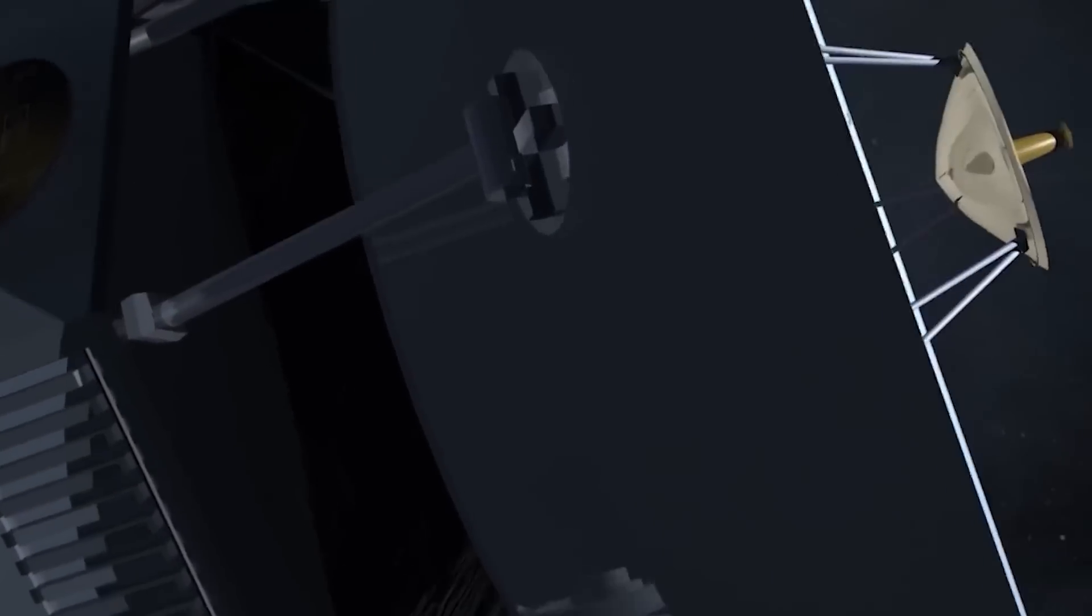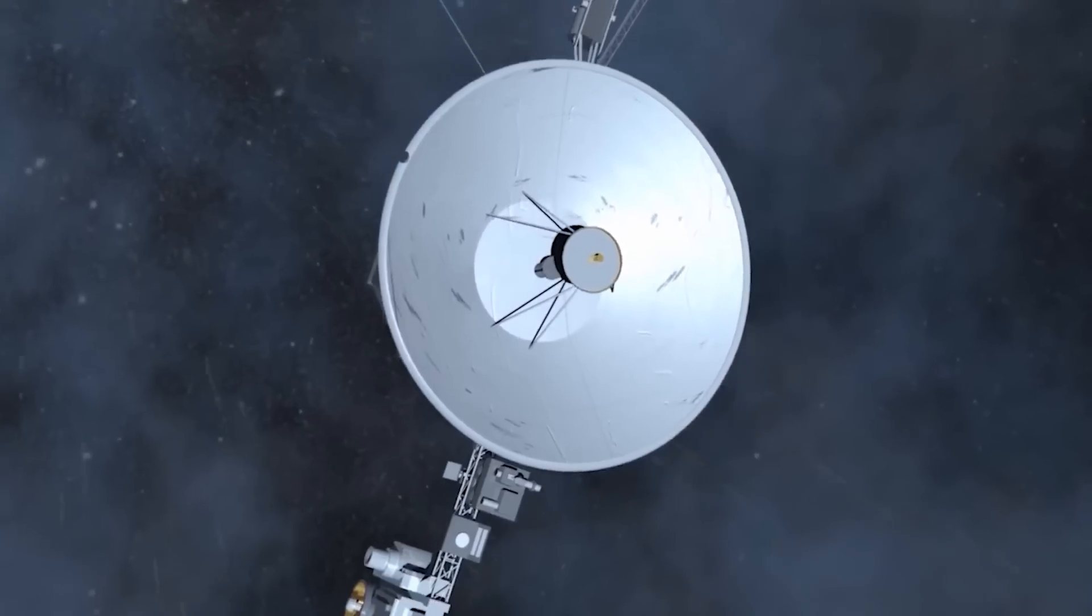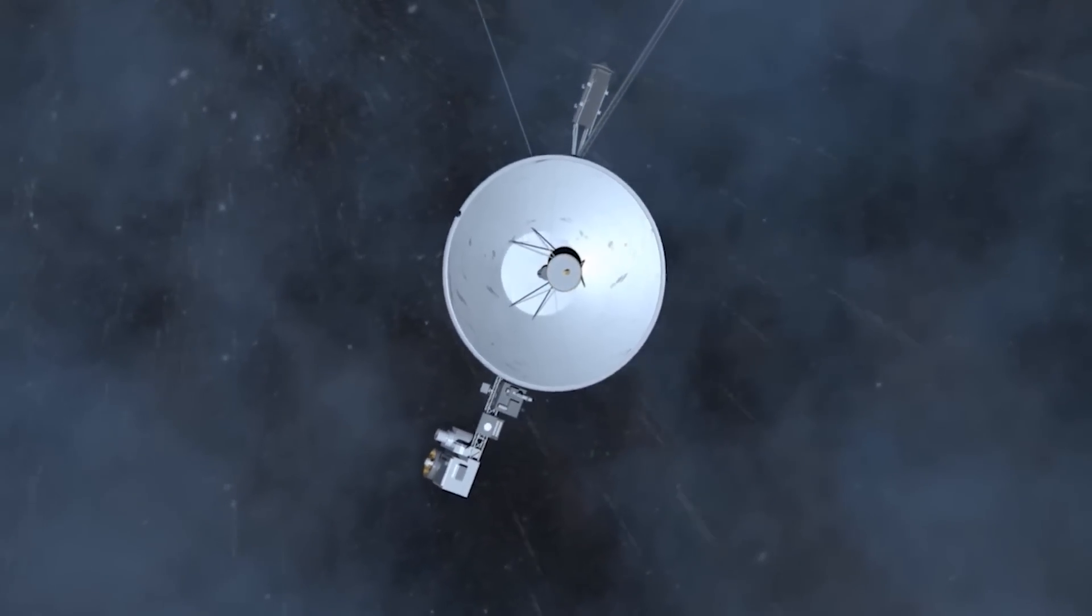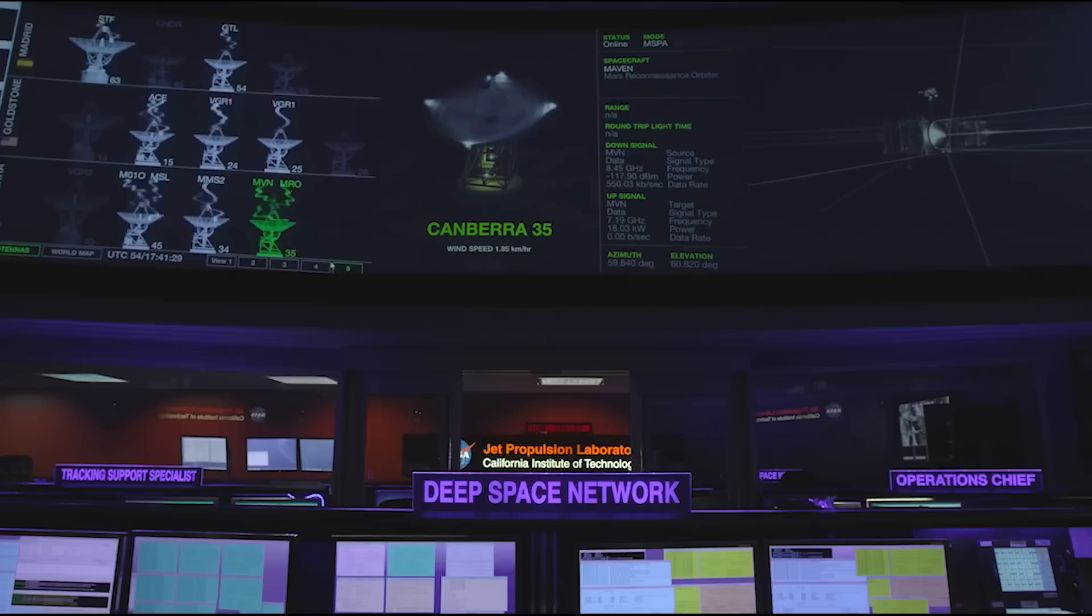The spacecraft had to traverse a challenging region known as the termination shock to reach interstellar space. In this area, the formidable solar winds, traveling at hypersonic speeds, collide with the opposing forces of the interstellar wind, creating intense resistance that Voyager 1 and its sister probe had to overcome.